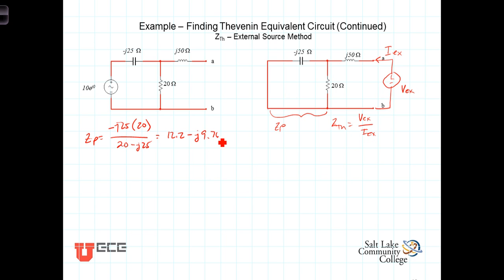Redrawing to make obvious what we're doing here, we've got this inductor J50, and we have this equivalent impedance of 12.2 minus J9.76. This is our external voltage, and there will be an external current flowing.